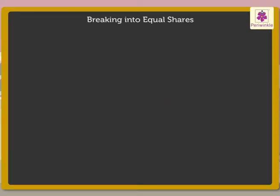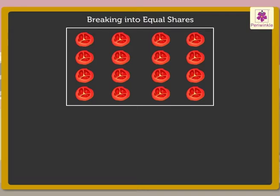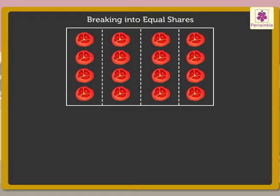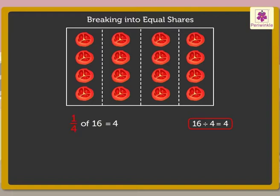So, here to find 1 fourth of 16, we have to make 4 equal groups. Now we have 4 groups with 4 tomato slices in each group. We write it as 1 fourth of 16 is equal to 4. Here we are actually dividing 16 by 4 to get 4.